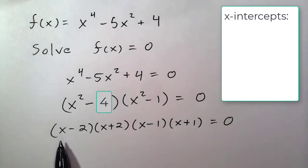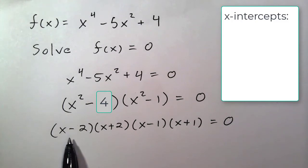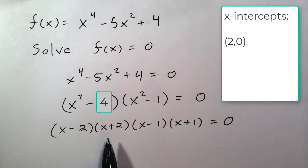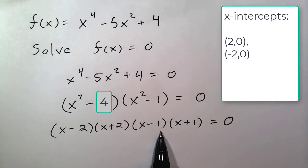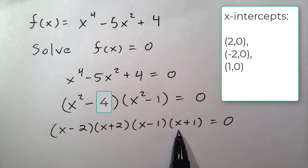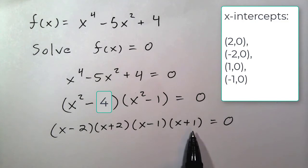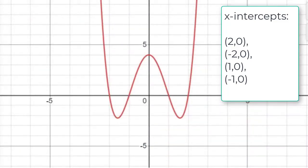Let's look at them one at a time. The factor (x - 2) equals 0 when x equals 2, so x = 2 is an x-intercept. The factor (x + 2) equals 0 when x equals -2, so -2 is another x-intercept. The next factor equals 0 when x equals 1, so x = 1 is an x-intercept. And the last factor equals 0 when x equals -1. So we found all four x-intercepts, exactly what we see in the picture.